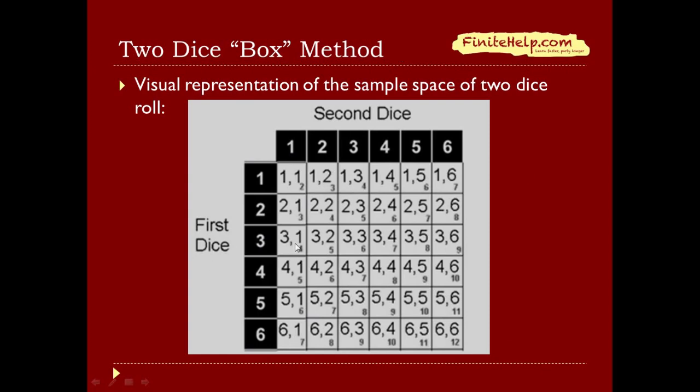But rolling 3 on the first and rolling 1 on the second is a different outcome than rolling 1 on the first, rolling 3 on the second, even though they effectively mean the same thing.